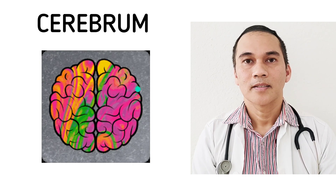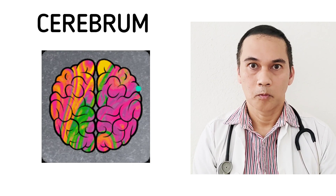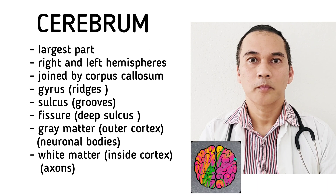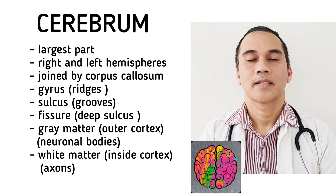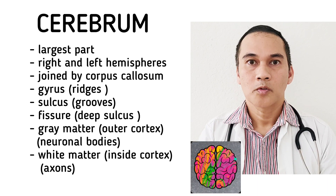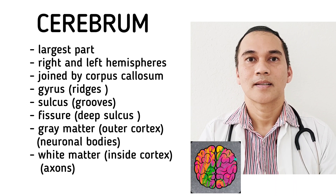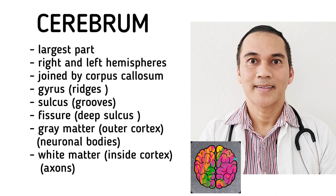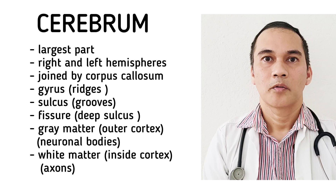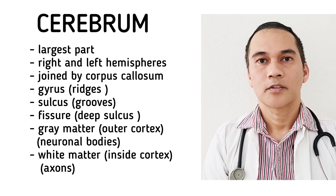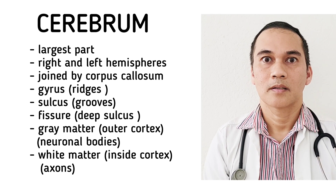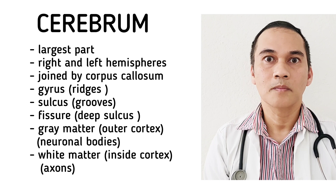Let's start with the cerebrum. The cerebrum is the largest part of the brain, and it is composed of two hemispheres — the right and the left hemispheres. The right and the left are joined by the corpus callosum,